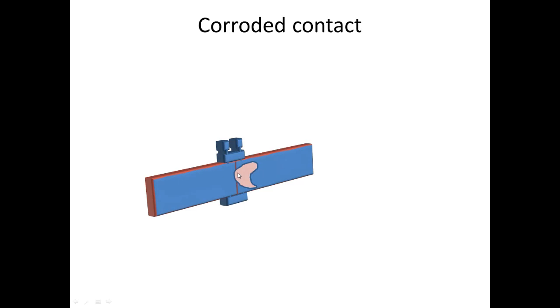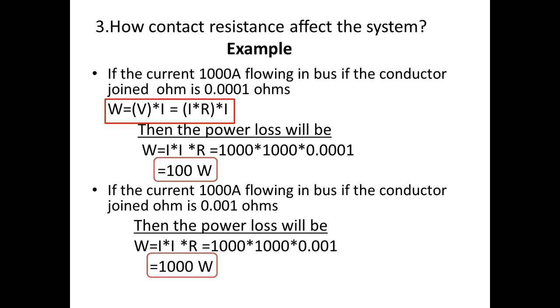Why is resistance important? We can see this with a small example. If the resistance increases between two contacts, what happens? Let us consider a thousand amps current flowing in a bus where the resistance between two conductors is 0.001 ohms.